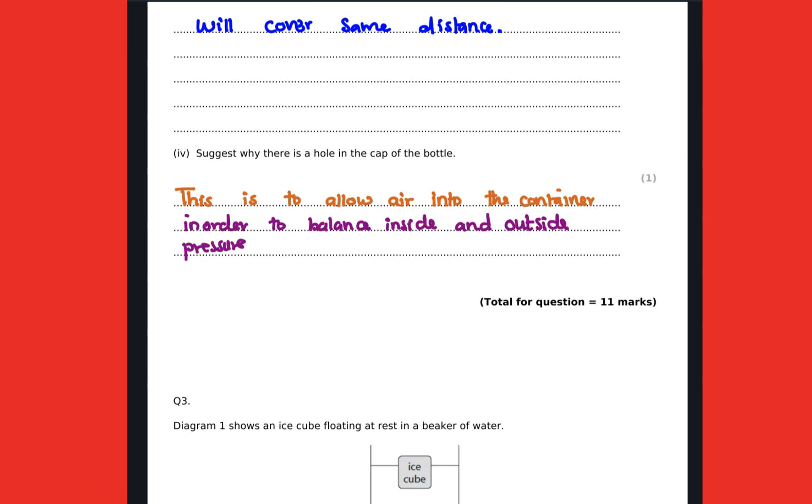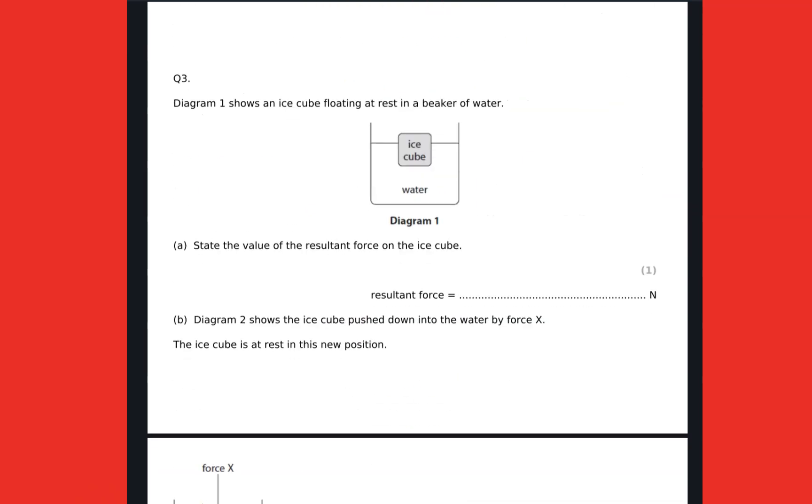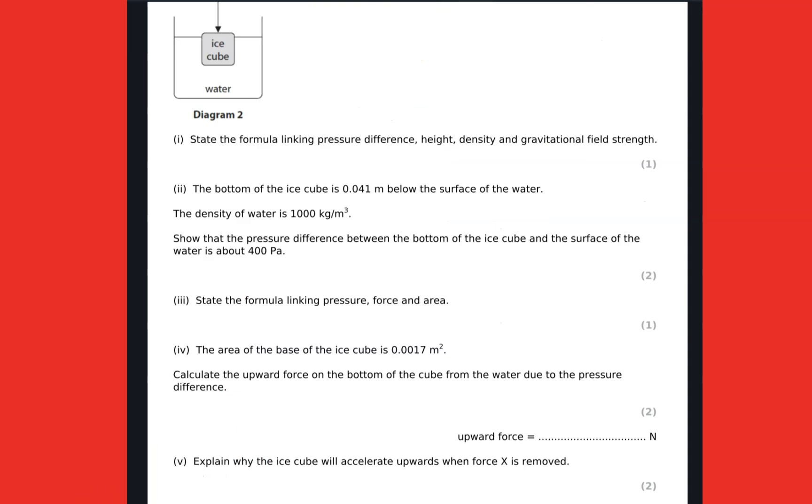We can move to question three whereby we are told that there is an ice cube that is resting on the water surface. It's resting, so it means it's not moving, so the resultant force is zero. At this given point the two forces are balanced, not moving, so meaning that the resultant force is zero. Still, the formula linking pressure difference, height, density and gravitational field strength is a question that you also expect to have. You need to know that it's P = h rho g.